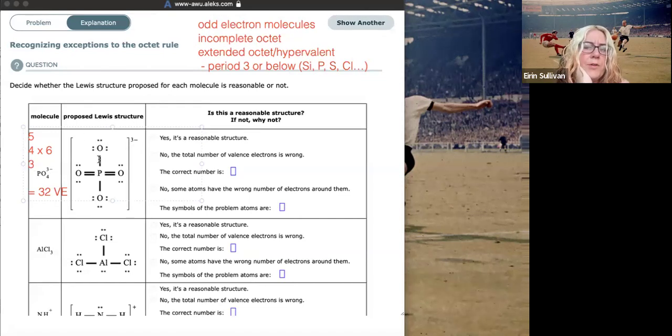The first thing you've got to do is check that this matches. So add up all your bonds, 2, 4, 6, 8, 10, 12. Then all your lone pairs, 14, 16, 18, 20, 22, 24, 26, 28, 30, 32. So we've got the right number of valence electrons.